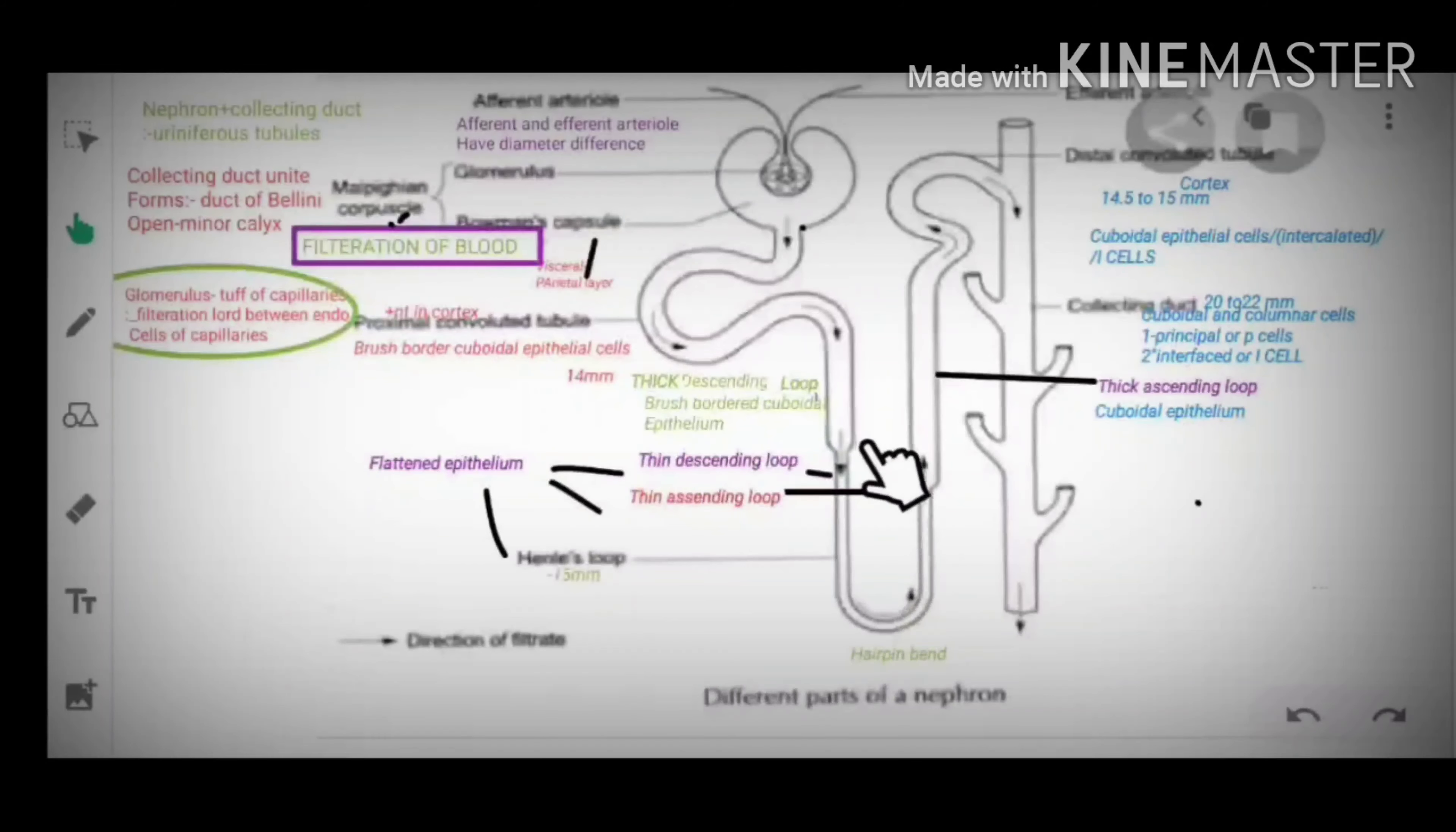The thin descending loop and thin ascending loop is made up of flattened epithelium and this loop of Henle is 15 mm. Whereas thick ascending loop of Henle is made up of cuboidal epithelium.